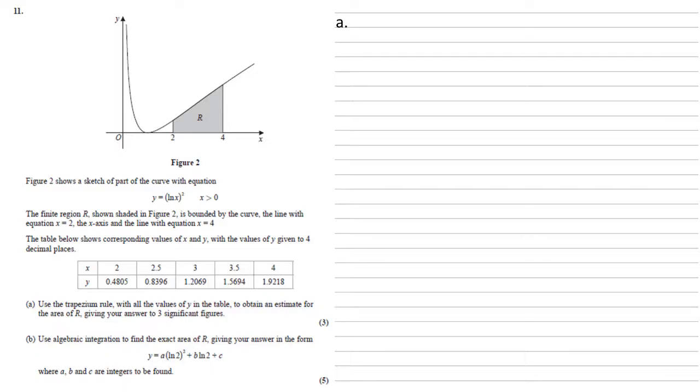Figure 2 shows a sketch of part of the curve with equation y equals ln x all squared, x larger than zero. The finite region R, shown shaded in Figure 2, is bounded by the curve, the line with equation x equals 2, the x axis, and the line with equation x equals 4. The table below shows corresponding values of x and y, with the values of y given to four decimal places.